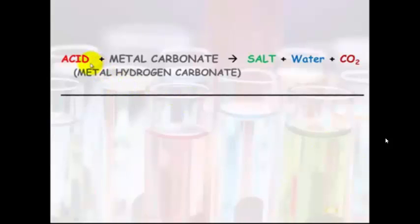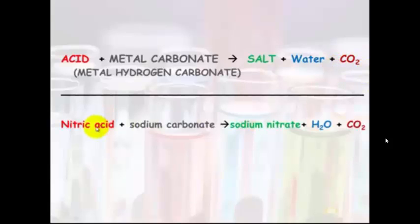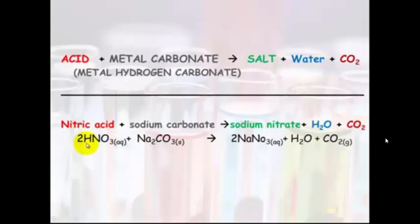And the last reaction is an acid plus a metal carbonate or a metal hydrogen carbonate. We'll make a salt plus water. And if you have a look, you can see the carbonate there. It's going to make carbon dioxide. So, nitric acid plus sodium carbonate will make sodium nitrate plus water plus carbon dioxide. 2HNO₃ plus Na₂CO₃ will make, always, always, always, water plus carbon dioxide. The hardest part is figuring out what the salt's going to be. You've got sodium and you've got nitrate. So you just need to make sure that those valencies are balanced there to get sodium nitrate.